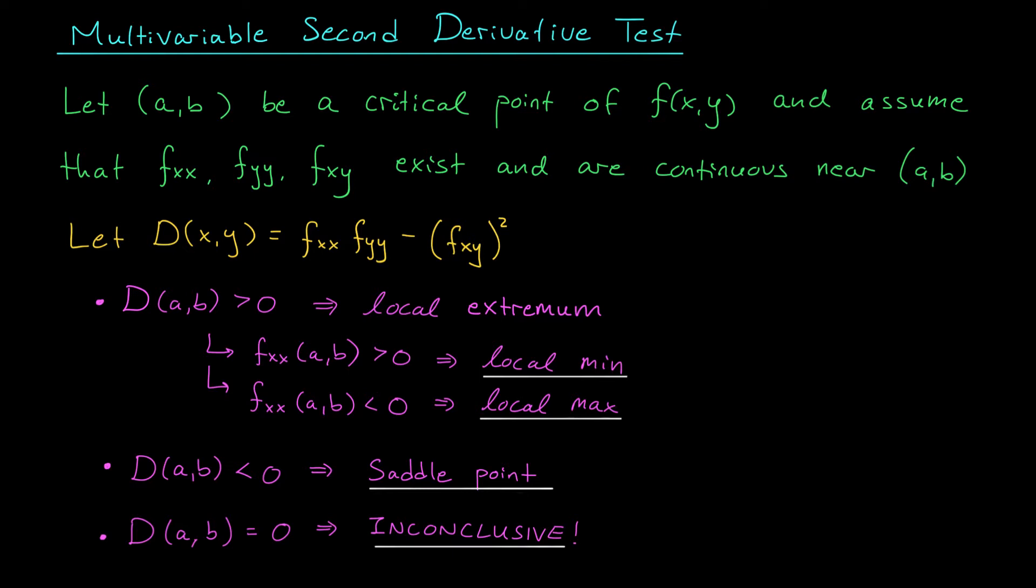The setup is the same. We begin with a critical point (a,b) of our function f. Since we want to be able to talk about second derivatives, we'll assume that our function has second derivatives at (a,b). And we're also going to assume that our function is not too crazy at this point.